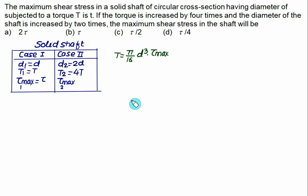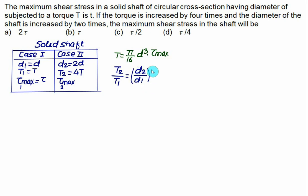For a solid shaft, T = (π/16) × d³ × τ_max. Taking the ratio T2/T1 = (d2/d1)³ × (τ_max2/τ_max1). Substituting T2 = 4T, T1 = T, d2 = 2d, d1 = d: 4T/T = (2d/d)³ × (τ2/τ). So 4 = 8 × (τ2/τ).